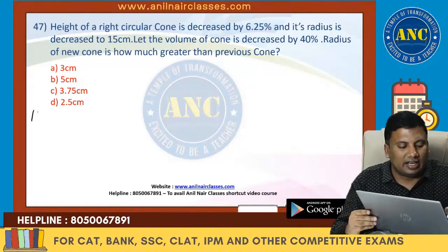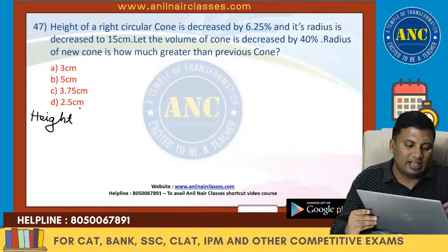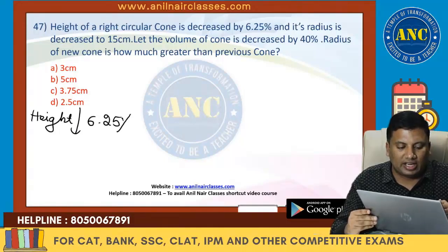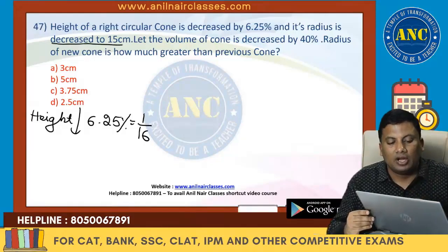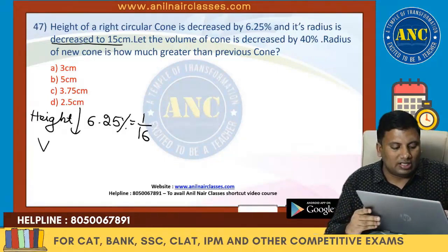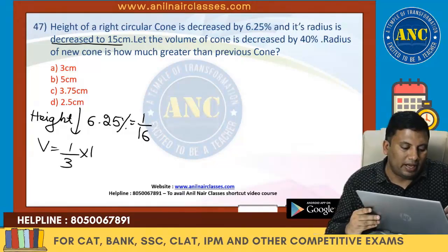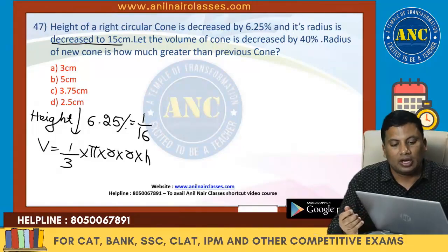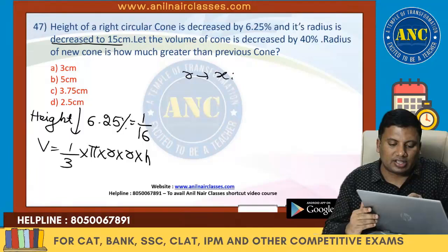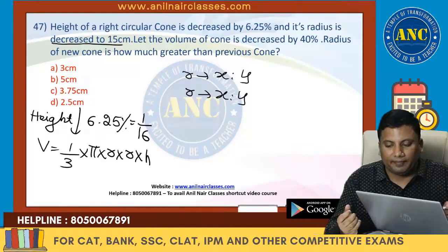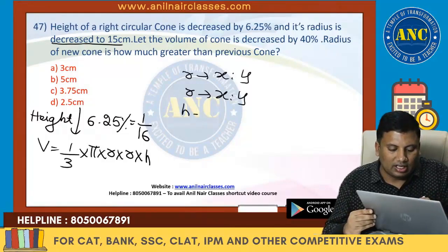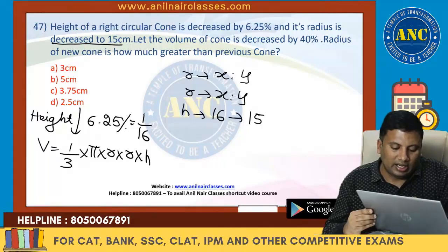Next: height of a circular cylinder. Height is decreased by 6.25%, which is 1/16. So 16 decreases to 15. Radius is decreased to 15. Volume of a cone is (1/3)πr²h. For radius: initial to final is x to y. For height: it is decreased, so 16 decreases to 15.